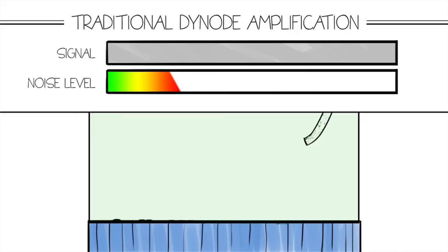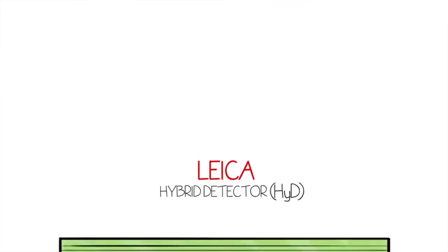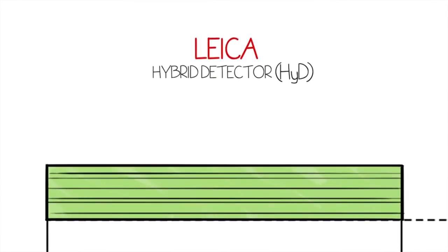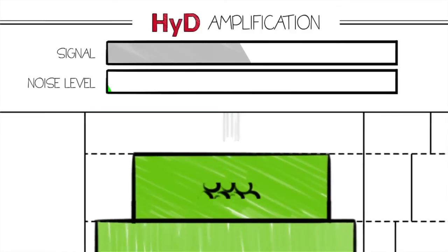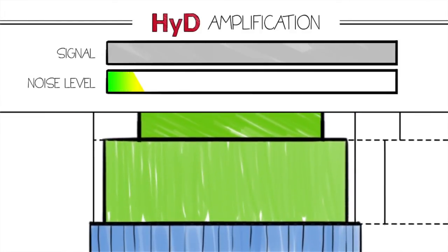The hybrid detector employs a unique working principle that solves many of the problems inherent in traditional detectors. The photoelectrons created at the GaAsP photocathode are accelerated in a strong electrical field, passing an electron bombardment and an avalanche element.